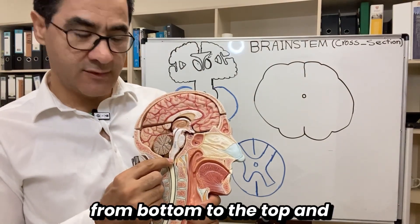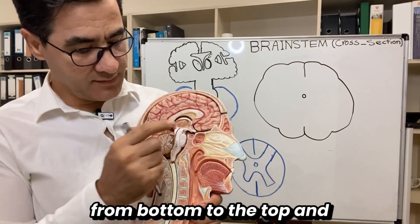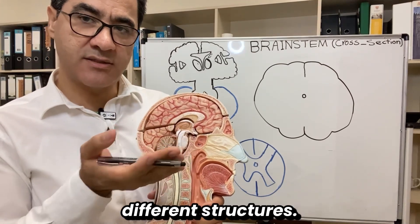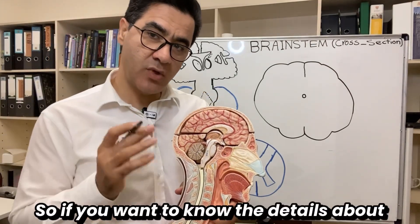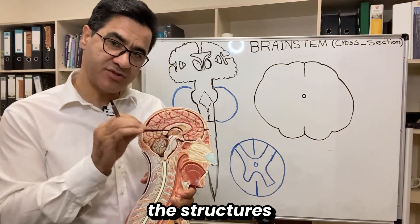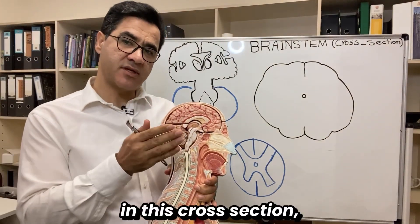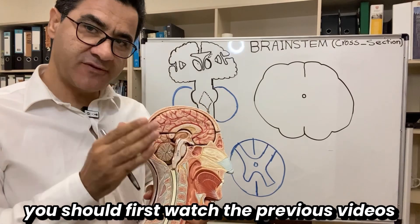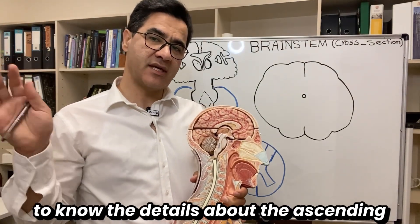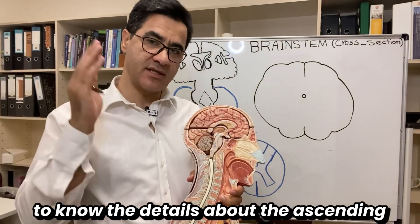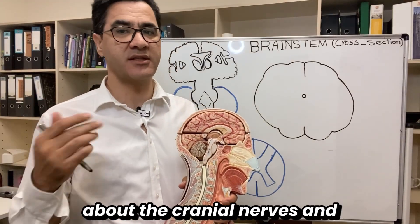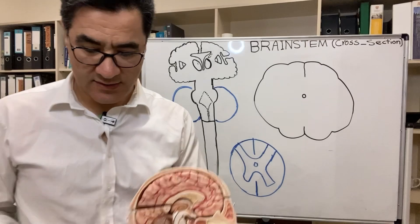Today I'm going to take a cross-section from bottom to the top and show you the different parts and structures. If you want to know the details about the structures in this cross-section, you should first watch the previous videos to understand the ascending and descending tracts and the cranial nerves and nuclei.